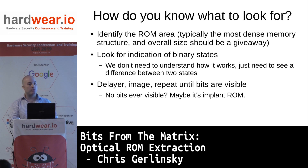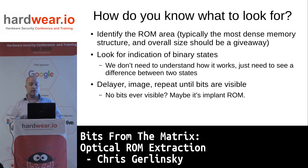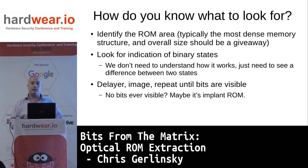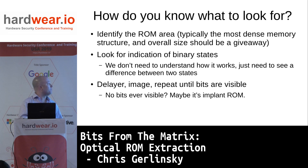How do we know what to look for when trying to find the ROM? We try to identify the area of the chip that holds the ROM — this is typically the most dense memory structure on the chip. The overall size of this area, the number of rows and columns, should give us a clue. Often we have some idea of what size of ROM we're looking for in number of bytes. We're looking for indications of binary states — a difference between two states, one being 1 and the other 0.